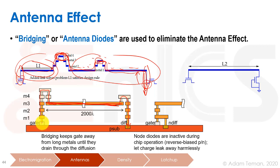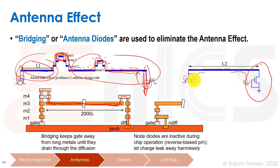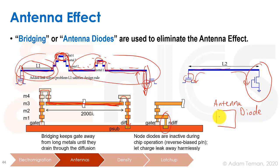If we can't make a bridge to reduce the metal area, we can place a diode a short distance away from the gate — called an antenna diode. When the long piece of metal is present, charge will dissipate through the diode instead of breaking the gate. We have a standard cell called an antenna diode that we can insert next to our gate to protect it from antenna problems. That's the second manufacturing effect: the antenna effect.